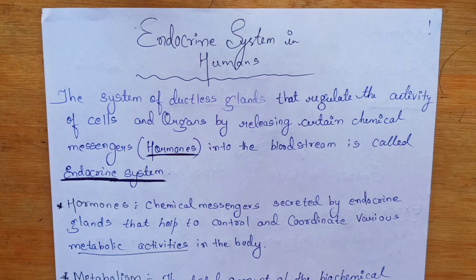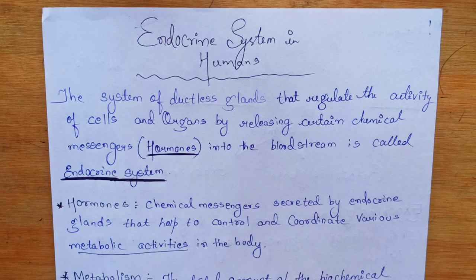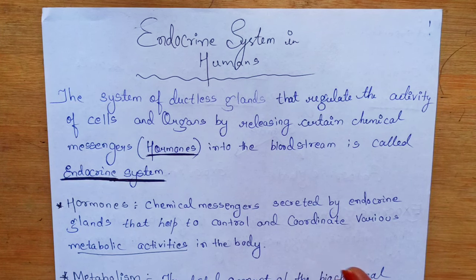In this chapter, we will study the endocrine system. This is a system in the body which helps us with a lot of things. You will have already studied the nervous system or the circulatory system in class 7. This is a new system — probably the first time you will study the endocrine system.